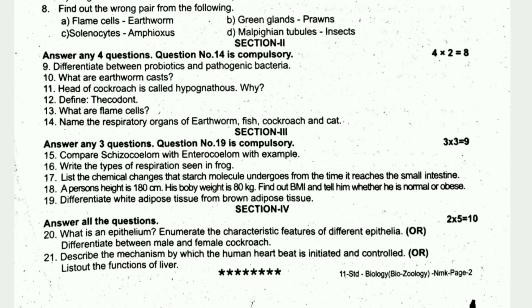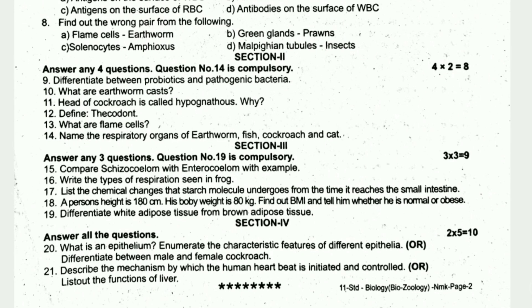Section 4 carries 5 marks each, for a total of 10 marks. Questions include: what is an epithelium — enumerate the characteristic features of different epithelia, or differentiate between male and female cockroach. Also: describe the mechanism by which the human heartbeat is initiated and controlled, or list out the functions of the liver.